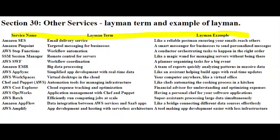Amazon AppFlow is like a digital pipeline that effortlessly moves data between different applications. It's a bridge that helps your apps share information with each other, so you don't have to manually transfer data between them.